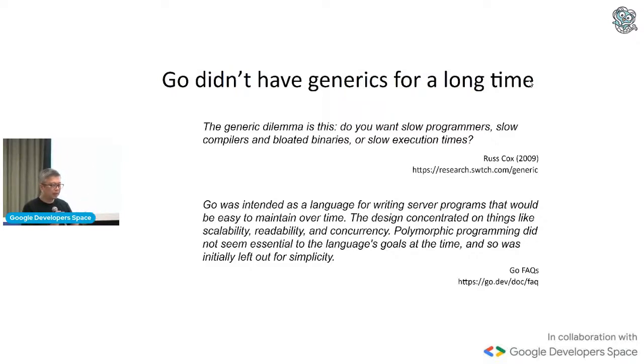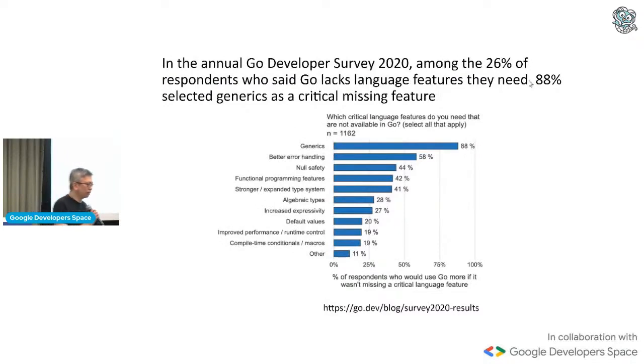And then, of course, in the Go FAQs, it's a little bit more toned down. But generally, what it's trying to say is that when they designed the programming language, they knew about this, but they deliberately left it out because they didn't think that it was that important. But a lot of Go developers thought otherwise. Just in the... And this is an annual Go developer survey that's been done for many, many years. In 2020, among the 26% of the respondents who said Go lacks language features they need, 88% of them said that they wanted generics as a feature. That's like a lot. If you look at the next feature they wanted, is better error handling. So coincidentally, these are the two topics we talk about today. Anyway, so generics was something that a lot of people wanted.